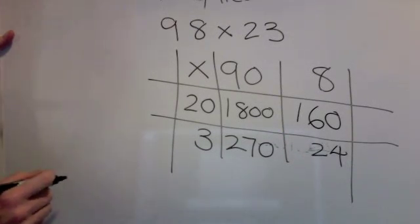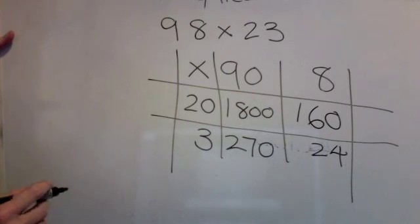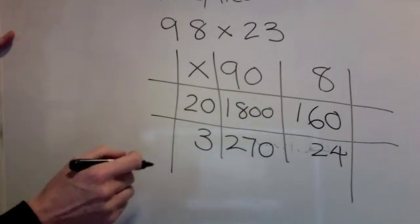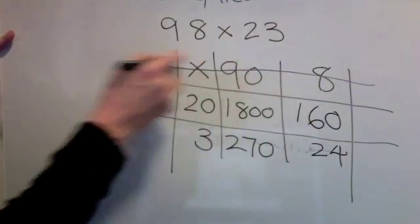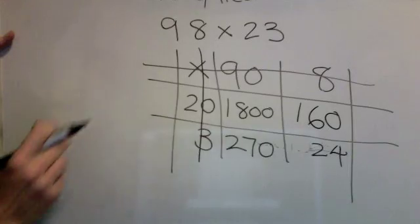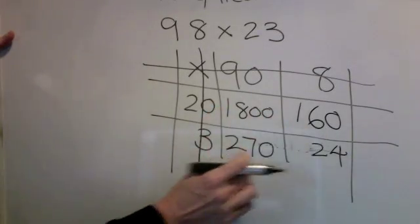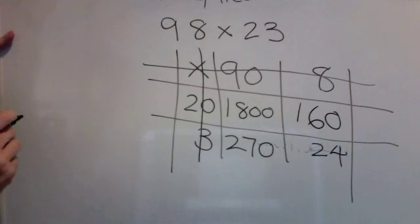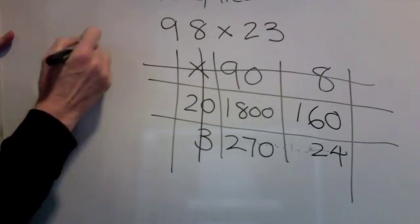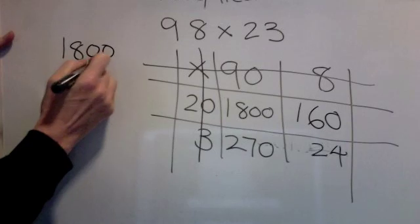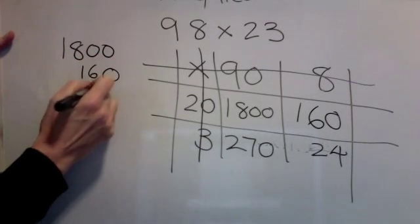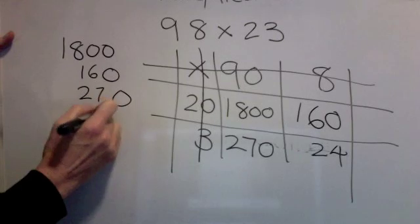Now I just need to add my answers together. Now if you find that your grid is a little bit confusing when you come to add up, just put a line through those and then you can see straight away that you only want to add the numbers in the middle. And we have 1,800, 160, 270 and 24.